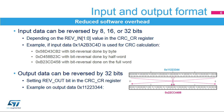The input and output format is fully configurable to reduce software overhead. It allows the application to manage different endian schemes. The input data can be reversed and performed on 8, 16, or 32 bits, depending on the REV_IN bits in the CRC_CR register. For example, input data 0x1A2B3C4D is used for CRC calculation as 0x58D43C2 with bit reversal by byte, 0xD458B23C with bit reversal by half-word, and 0xB23CD458 with bit reversal by full-word.